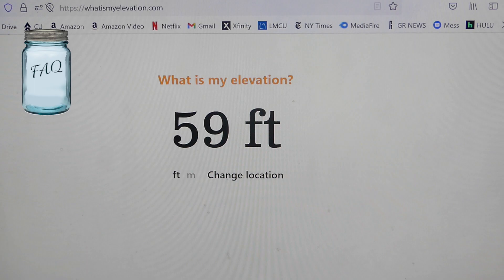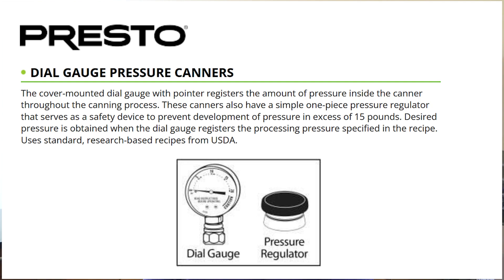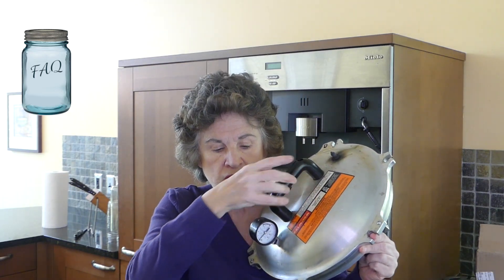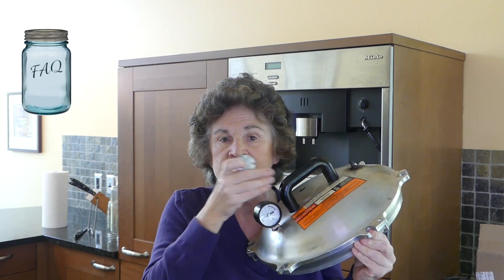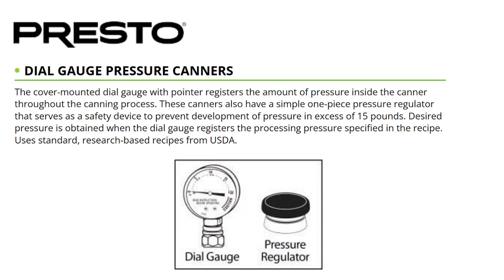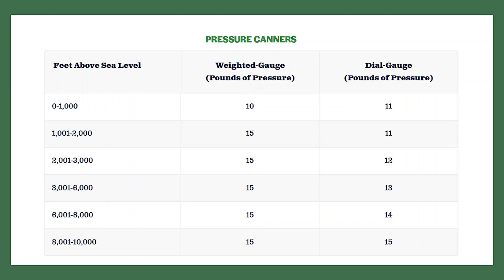Is there a difference between weighted gauge pressure canners and dial pressure canners? Yes, there is. I have an All American which has a dial, but we primarily use the weight. If you're using a Presto, very often it is a dial gauge canner. Dial gauge canners allow you to increase pressure at lower increments — one pound at a time — whereas weighted gauge canners only increase in five-pound pressure increments.